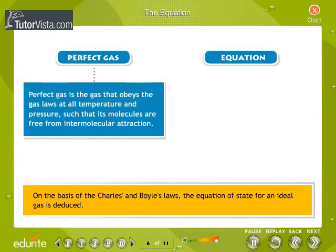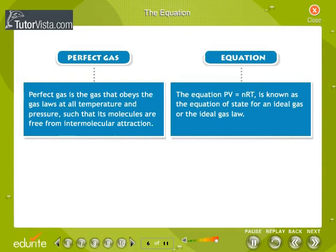On the basis of Charles' and Boyle's Laws, the equation of state for an ideal gas is deduced. The equation PV equals nRT is known as the equation of state for an ideal gas or the ideal gas law.